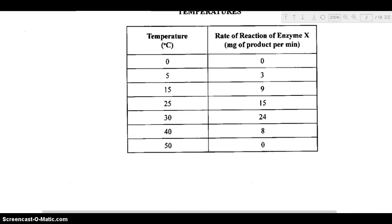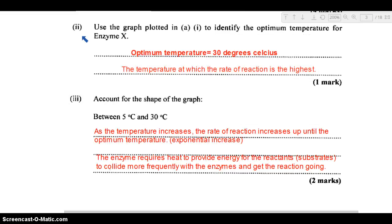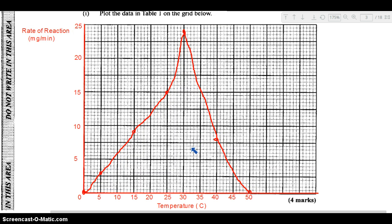Part 2 says use the graph plotted in A1 to identify the optimum temperature for enzyme X. The optimum temperature is 30 degrees Celsius. If you look at the graph, the optimum temperature is represented by the peak of the graph, the peak of the curve, the top of the mountain. That is when the reaction rate is at its highest at 24 milligrams per minute. You simply come down to see what temperature that is at, which is 30 degrees Celsius, when the reaction is the fastest.